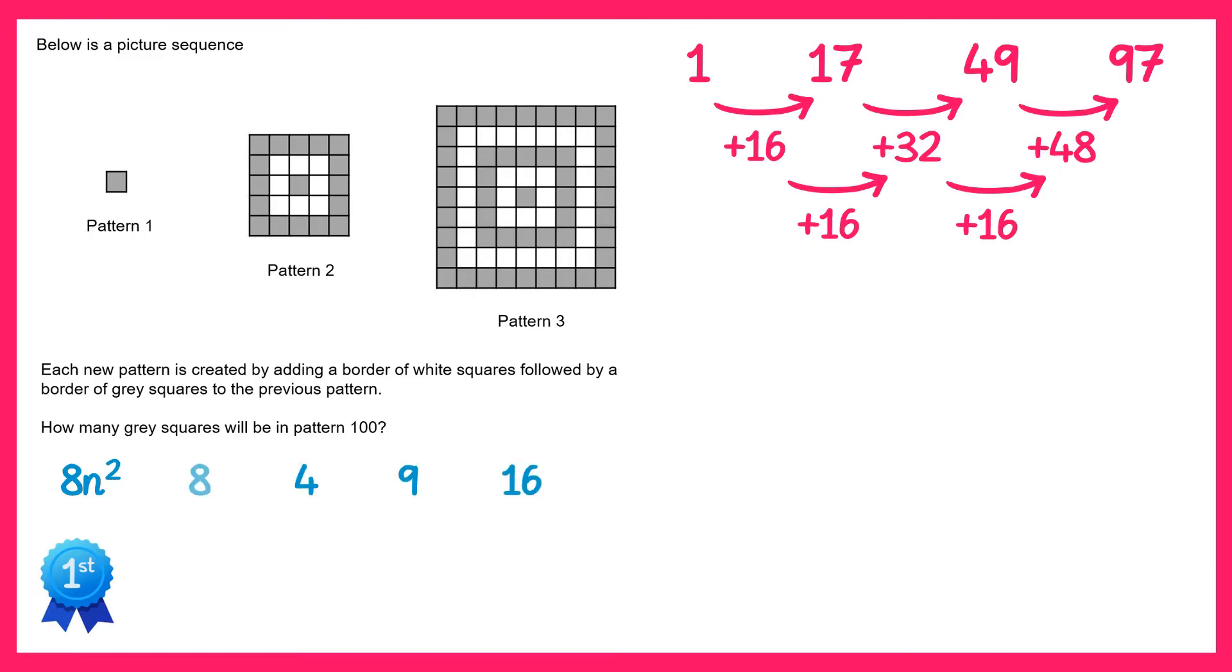1 times 8 is 8, 4 times 8 is 32, 9 times 8 is 72, and 16 times 8 is 128. So this is what 8n squared is.